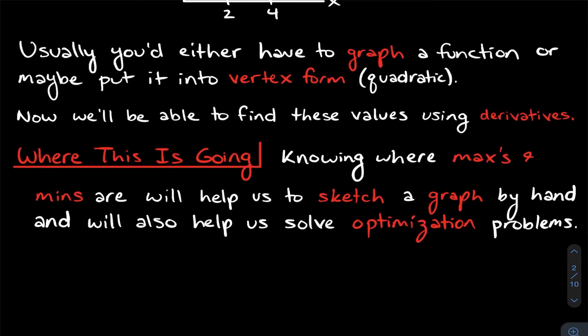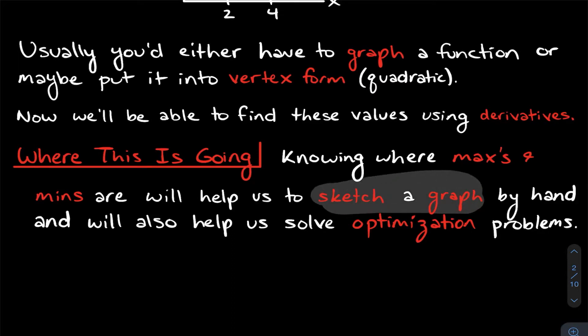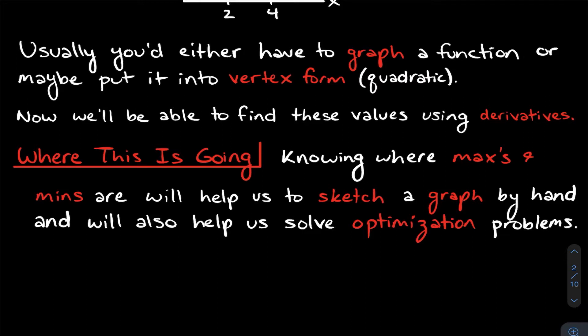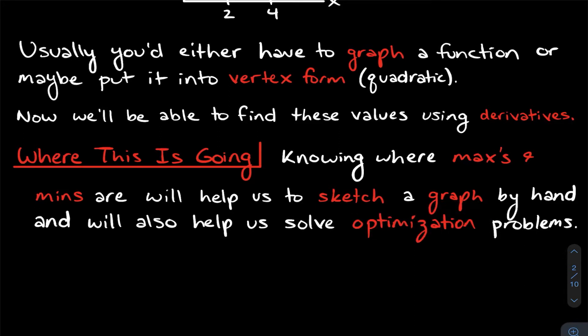Where is this all going? If we know the max or min values, it helps us sketch graphs by hand for quick back-of-the-envelope calculations. It also helps us solve optimization problems — minimizing cost, maximizing volume of a container, and so on. That's why we need to be able to find maxes and mins.